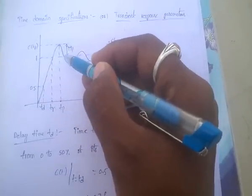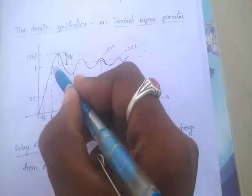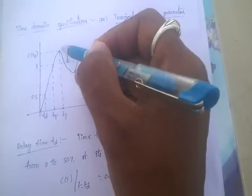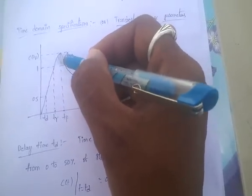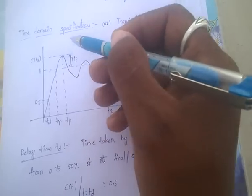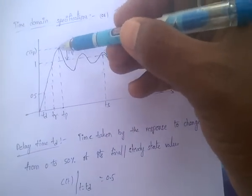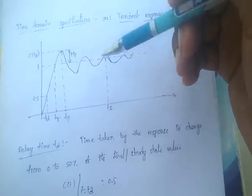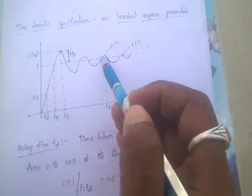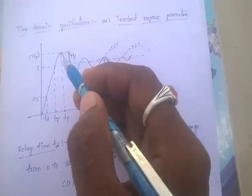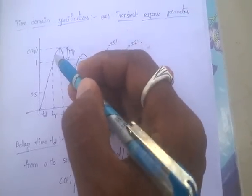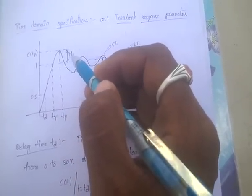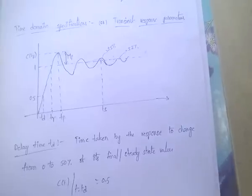MP is the peak overshoot. The desired output is 1, but the response exceeds 1 — that excess is the error. Peak overshoot is the maximum error at the output.